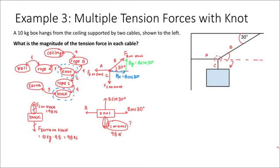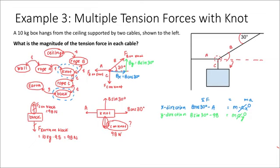If you're unsure about that, you can draw a force diagram for rope C and you'll see that by Newton's third law, the force that the rope exerts on the block will be equal to the force that the rope exerts on the knot. Now we have enough information to solve this problem. Let's write out the sum of forces in the horizontal and vertical directions. If I call right and up positive, the sum of forces in the x direction would be B cosine 30 minus the force of tension in rope A, equal to zero. In the y direction, that would be B sine 30 minus 98 newtons, equal to zero.